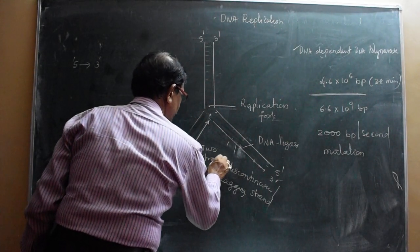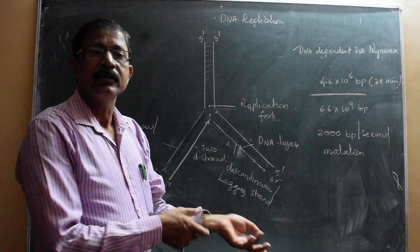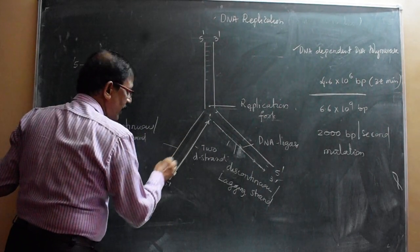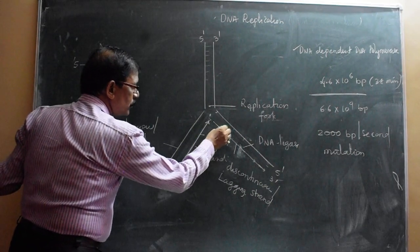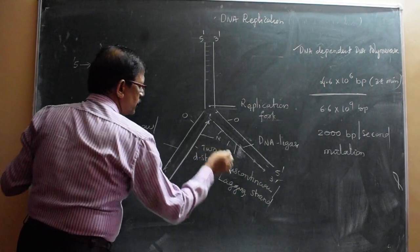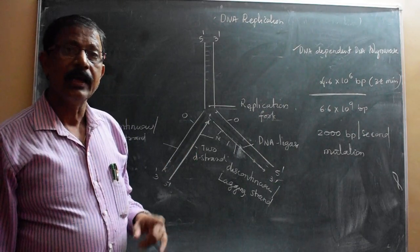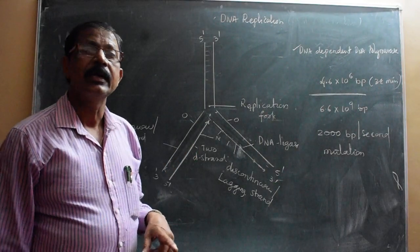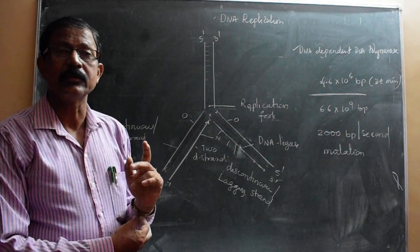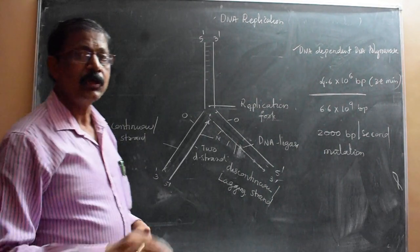The discontinuous lagging strand reaches the 3' region and very quickly one important enzyme - DNA ligase - helps join all the gaps. Thereby it also becomes a continuous strand. In the beginning they look like gaps, but once DNA ligase fills wherever the gaps are, all are joined and make a continuous strand. Thereby two daughter strands are formed - one is old and one is new in each daughter DNA.